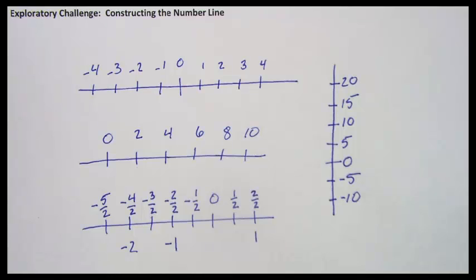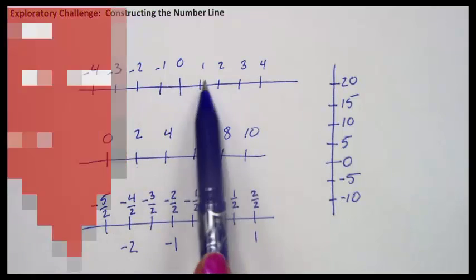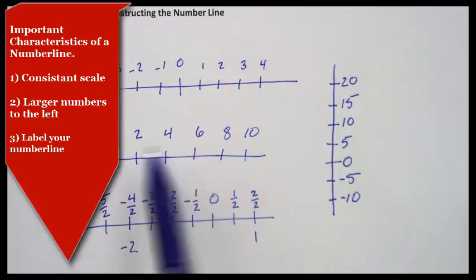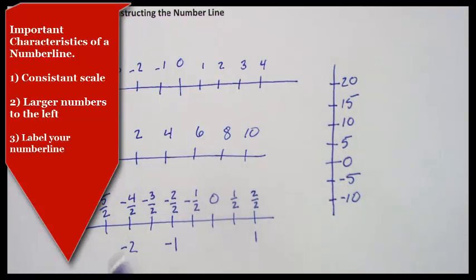Your number line only needs three really important characteristics. A consistent scale, that means you're counting by the same amount between marks, either by ones, twos, fives, halves. You could count by tenths. You could even count by three and a halves if you really wanted to. As long as you label your number line, that's okay.